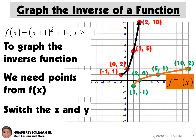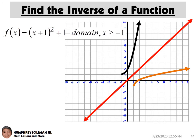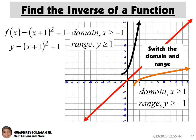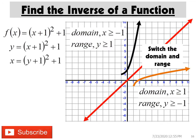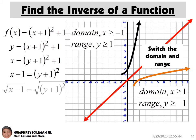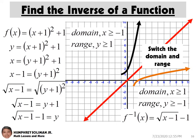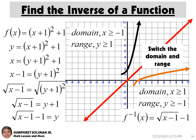We have seen how to graph the inverse of a function with a restricted domain; now we will solve for it. According to the graph of the given function, its range would be y greater than or equal to 1. If we switch the domain and range of the given function, it gives us the domain and range of the inverse. Solving for the inverse: Step 1, switch the x and y variables. Then solve for y, giving us y equals the square root of the quantity (x − 1), minus 1. So f⁻¹(x) equals the square root of (x − 1) minus 1.